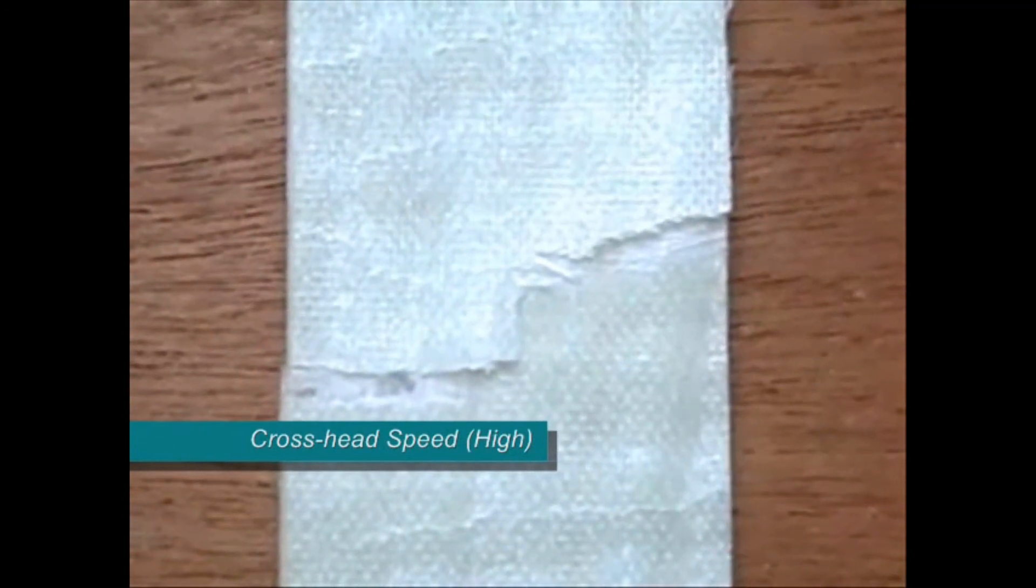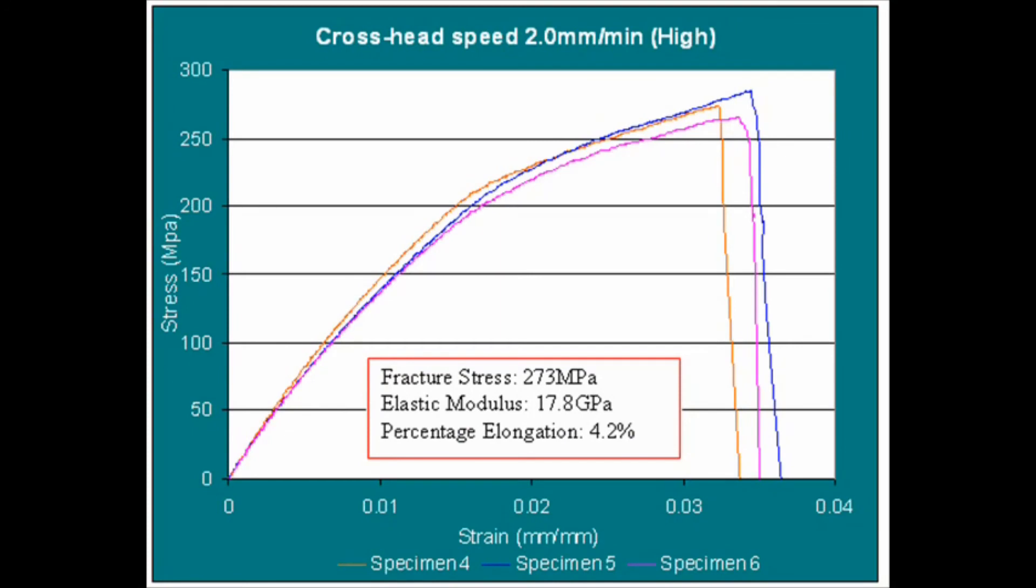Now for the higher crosshead speed you can see that the mode of failure is same, which is delamination, but here the fracture area is much more enlarged and also the specimen swells because of the delamination.